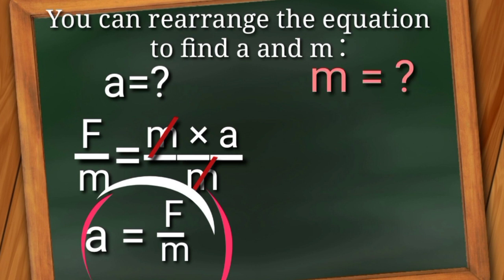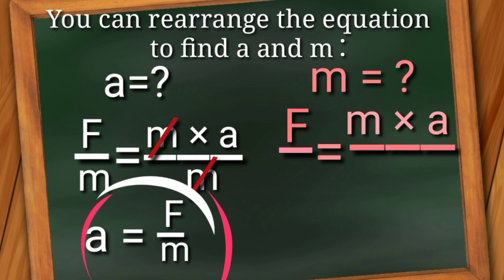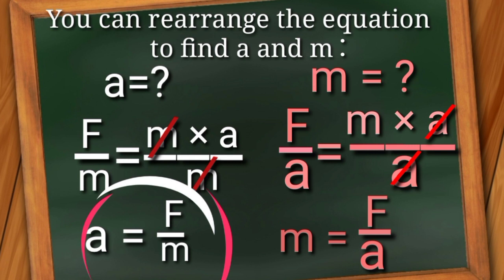In finding M, again, write down the equation F = M × A, divide both sides by A, then cancel out A. The final formula for mass is M = F / A.